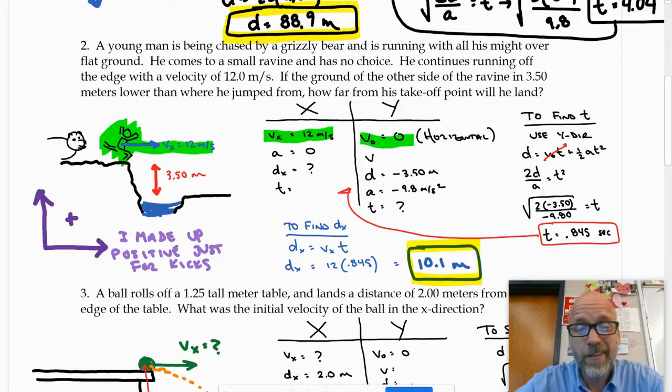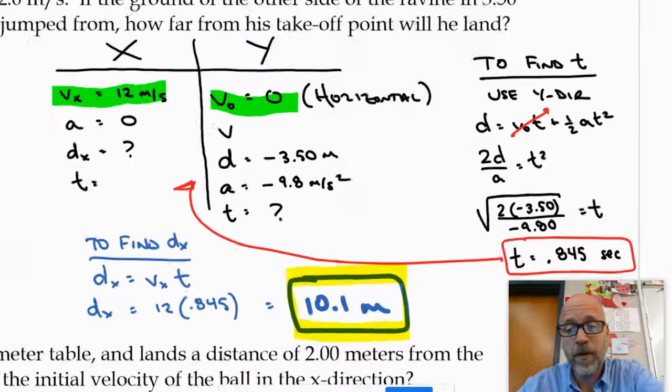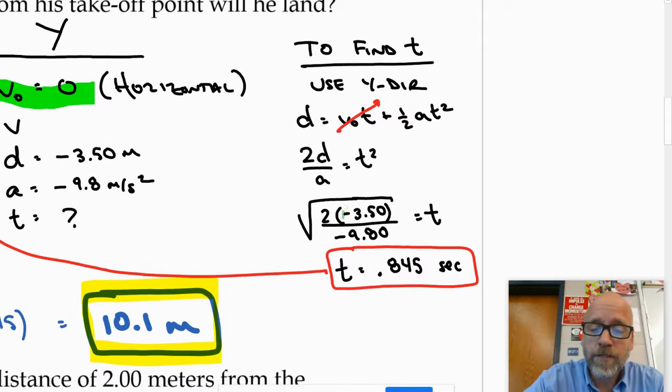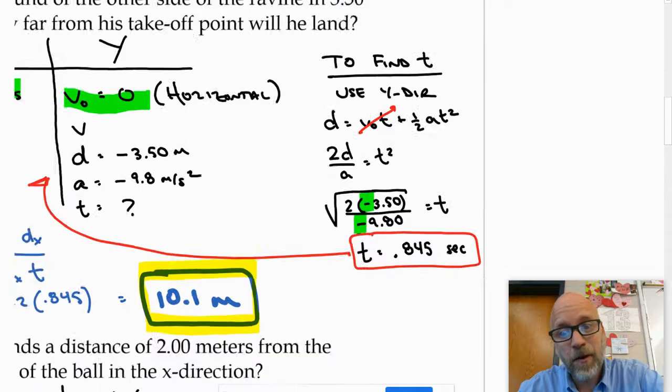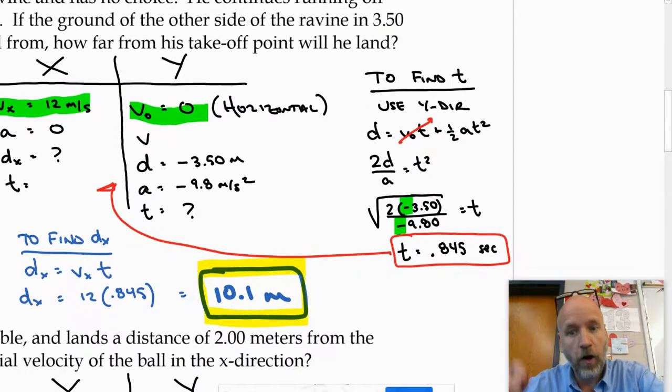Other than that, it's a piece of cake. The only other thing I might point out is that I had to be careful with my sign. Since down was negative, the distance and the gravity were both negative, and those two negative signs cancel. If I ended up with a negative sign underneath the radical, that would mean that somebody messed up the signs.